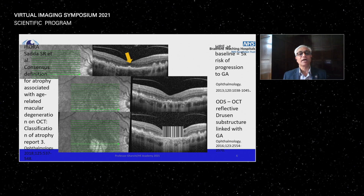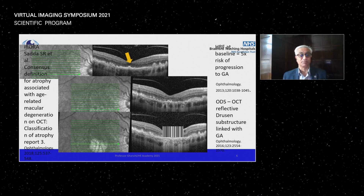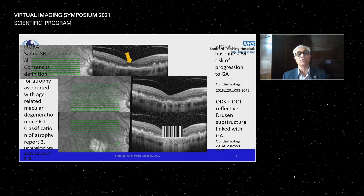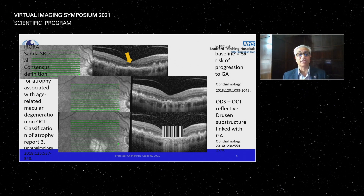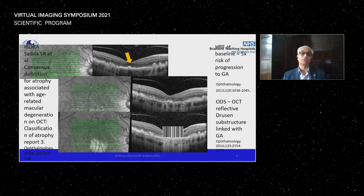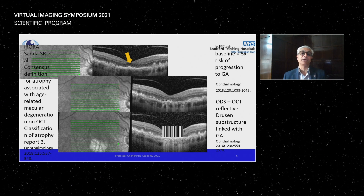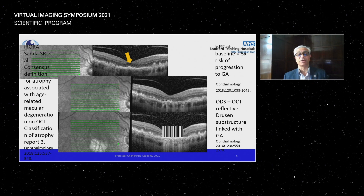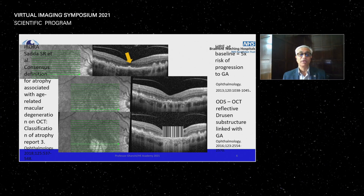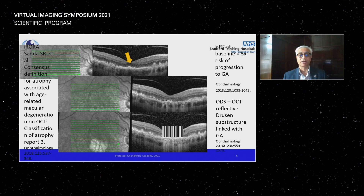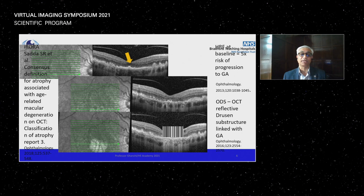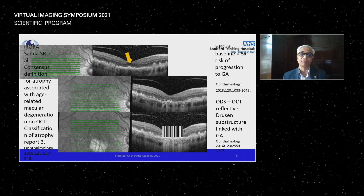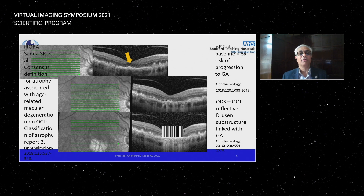The hyperreflective foci indicated by the arrow progress over time to geographic atrophy. In serial images taken two years apart, the bottom picture shows complete outer retinal and retinal pigment epithelial atrophy — CORA — also known as geographic atrophy.